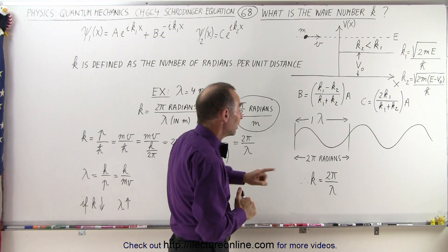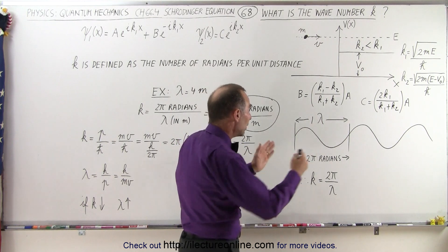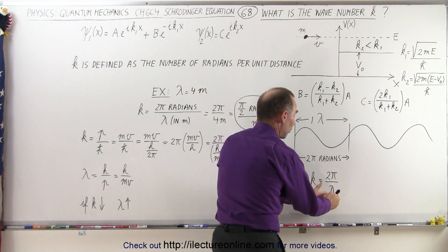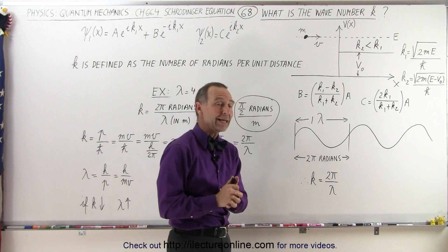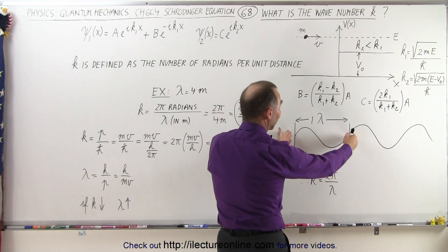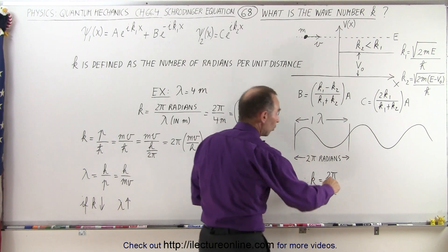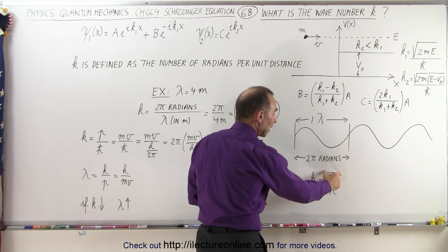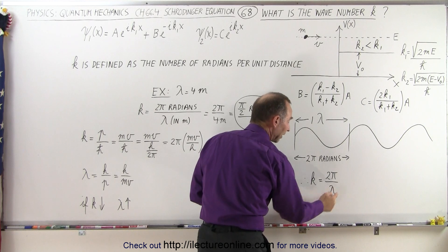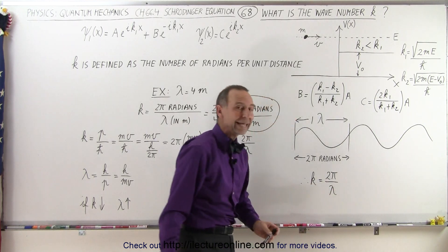Now if we then take the radians and we divide it by the wavelength, we end up with the number k. After all, the wavelength is in meters and the wavelength can also be expressed in 2π radians. So for a full wavelength, 2π radians divided by the length of the wavelength, we end up with the number k.